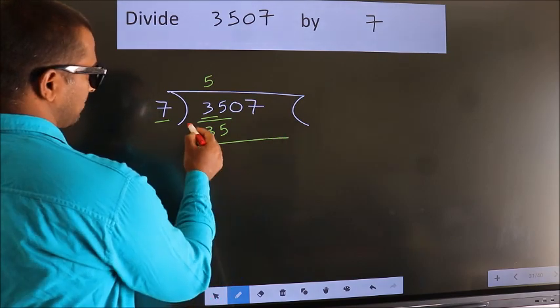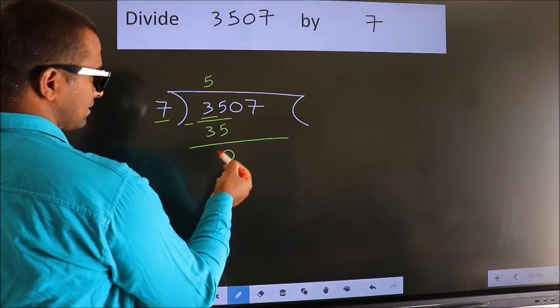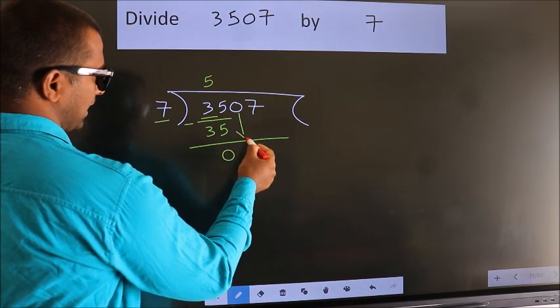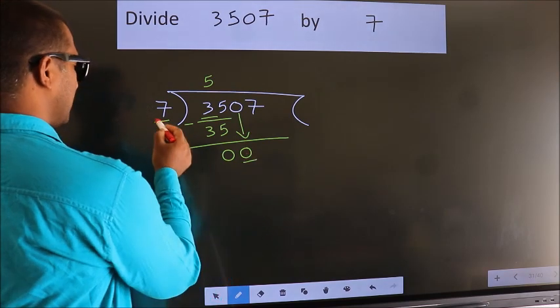Now we should subtract. We get 0. After this, bring down the beside number. So 0 down. Here we have 0. Here 7.